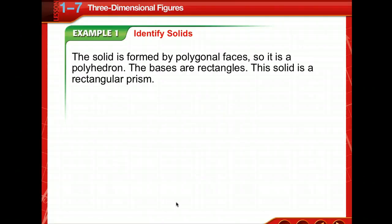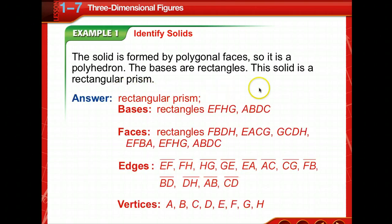Okay, this solid is formed by polygonal faces, so it is a polyhedron. The bases are rectangles, so this solid is a rectangular prism. It's named by the base. The base is a rectangle, so it's a rectangular prism. I'll let you pause for a moment. Why don't you write these answers down.